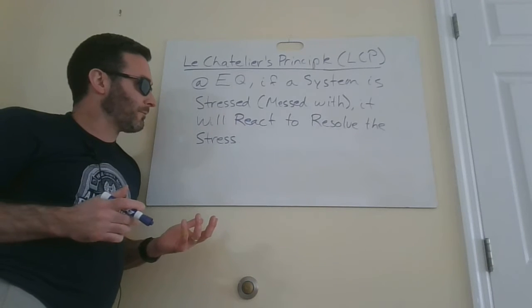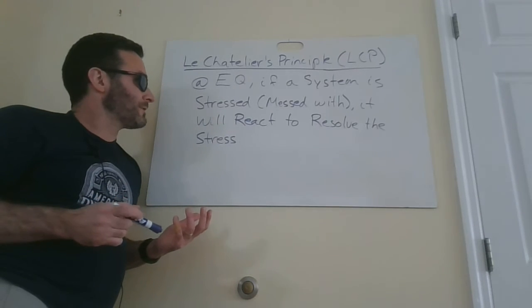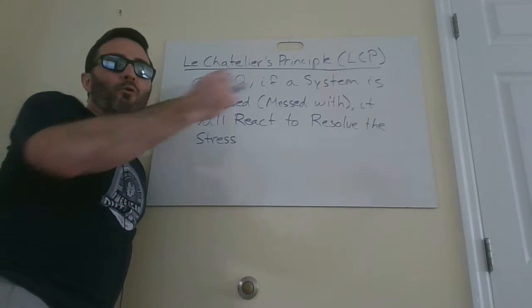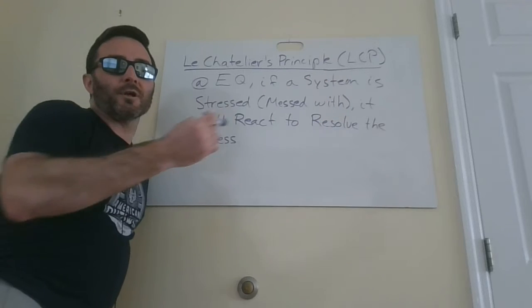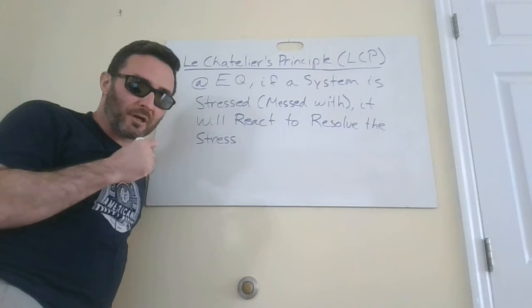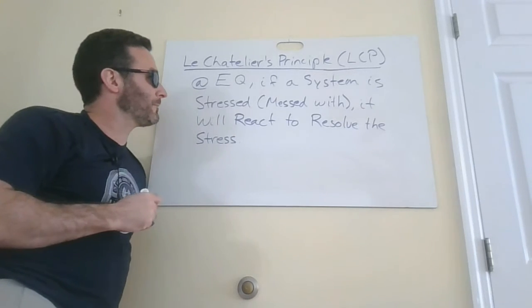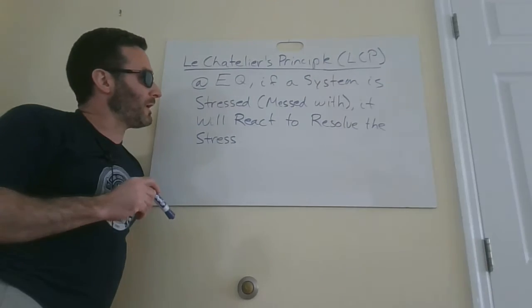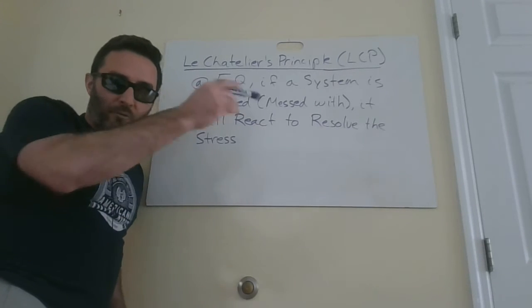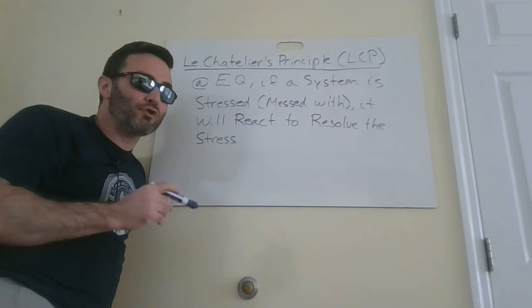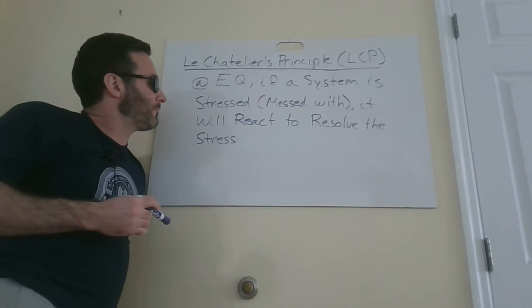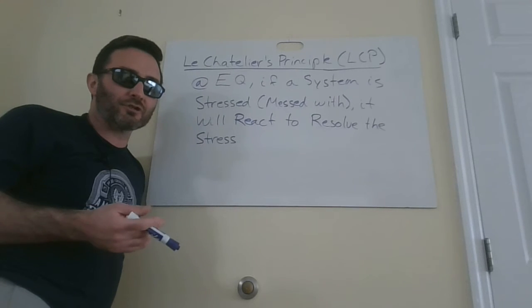There are a lot of different versions of it, but a great summary is: if a system is at equilibrium — meaning we're at the point where the rate going forward equals the rate going back — not amounts of reactants and products, but the rate going forward is the same. So at equilibrium, if a system is stressed, meaning you mess with the system so that forward and back were equal and now you disturb it, the system will react to resolve the stress.